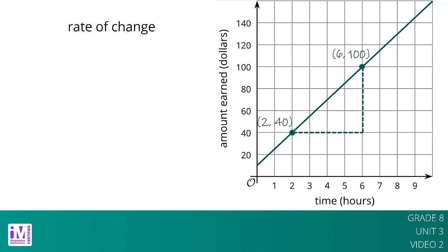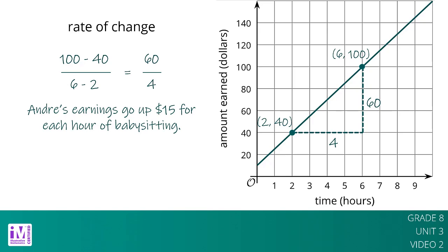For example, take the points (2, 40) and (6, 100). They mean that Andre earns $40 for working two hours and $100 for working six hours. The rate of change is the quantity 100 minus 40 divided by the quantity 6 minus 2 equals $15 per hour. Andre's earnings go up $15 for each hour of babysitting.